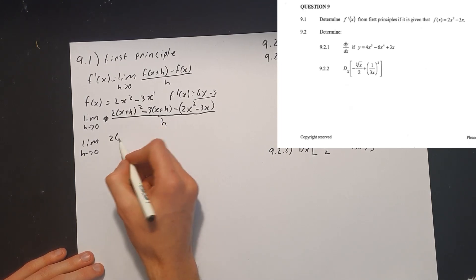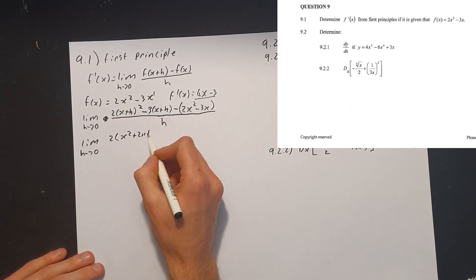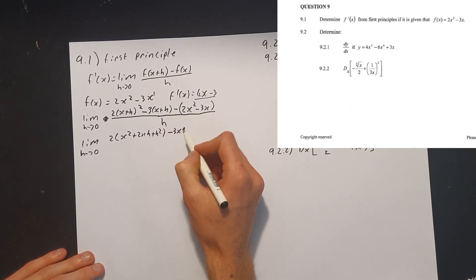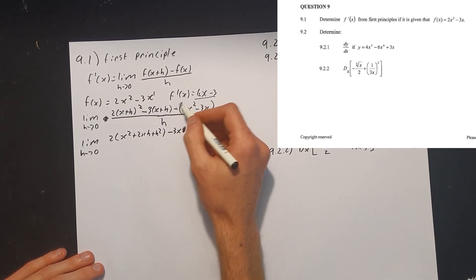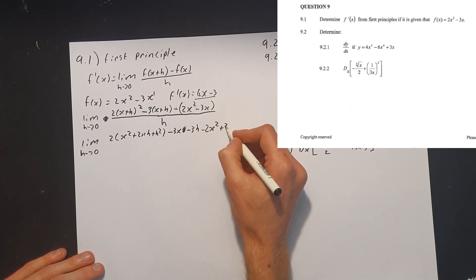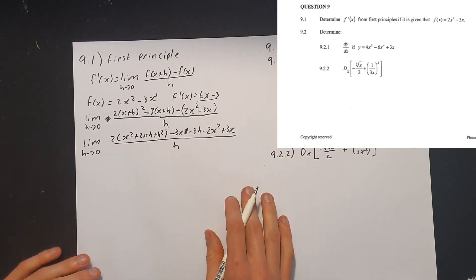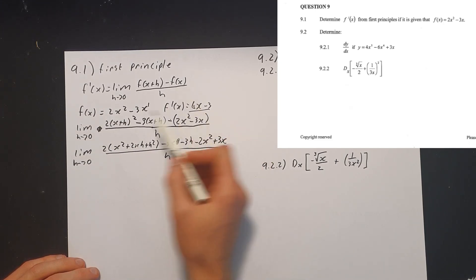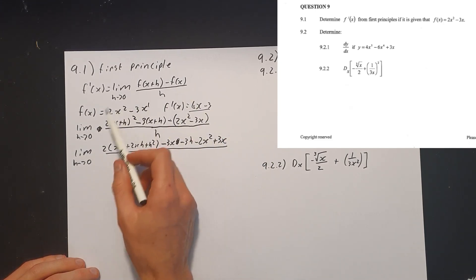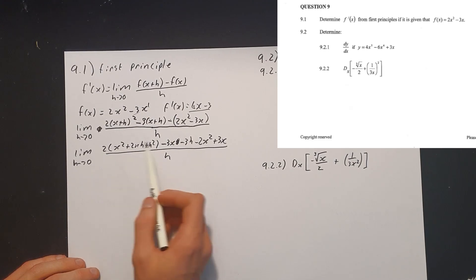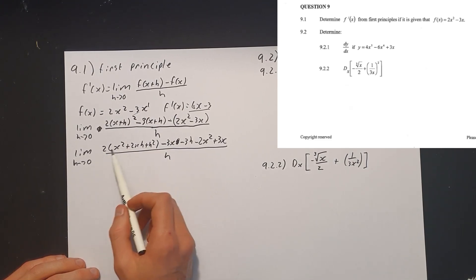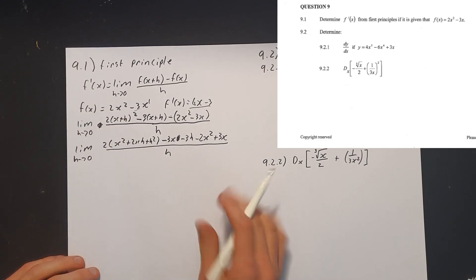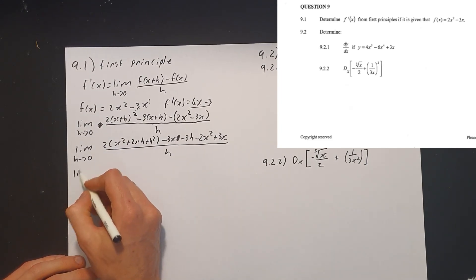Write again the limit as h tends to 0. Expanding: 2 times (x squared plus 2xh plus h squared) minus 3x minus 3h — don't forget to carry the negative 3h — then we take the negative into the brackets: minus 2x squared plus 3x, all divided by h. A quick hint: your original function terms — this one and this one — must cancel out with the same terms from when we substituted x plus h.